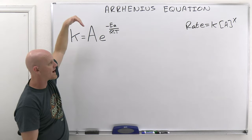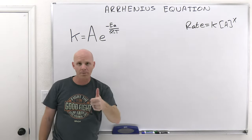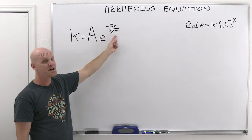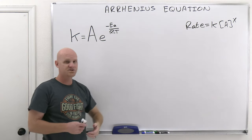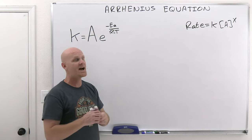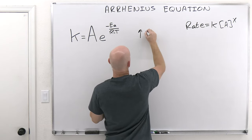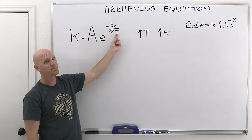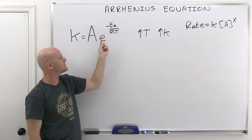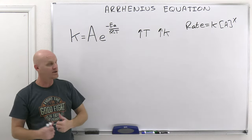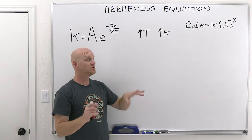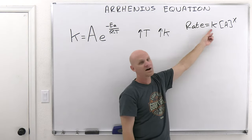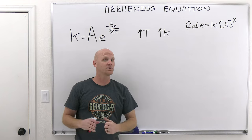You should understand the effects of activation energy and temperature on the value of the rate constant. Reactions tend to go faster at higher temperatures because you get a higher value of the rate constant. A larger temperature means you have a smaller negative number for the exponential, which leads to a higher k value. A higher temperature leads to a higher k value, and a higher k value leads to a higher rate — that's the mathematical influence of temperature on the rate.